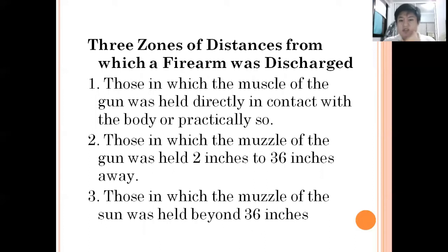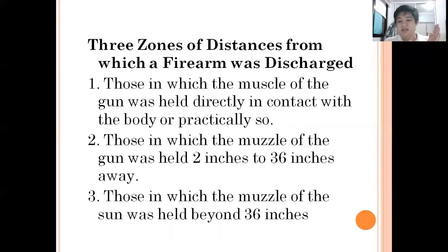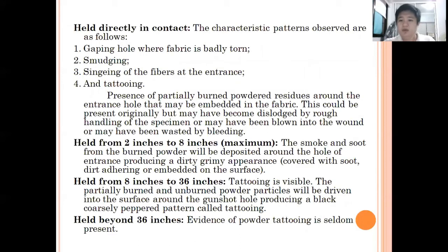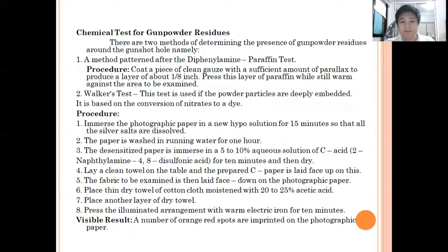The three zones of firing distance are: those in which the muzzle of the gun was held directly in contact with or partially touching the body; those in which the muzzle was held two inches to 36 inches away; and those in which the muzzle was held beyond 36 inches. These zones distinguish close range, intermediate range, and distant range shooting.